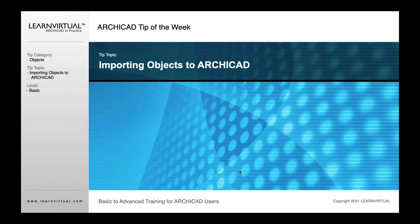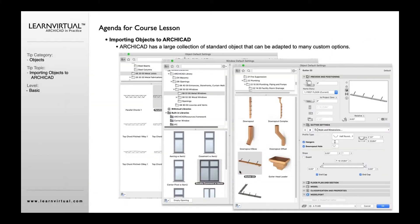Let's talk about importing objects to Archicad. This is our tip of the week. With importing objects, we have objects in Archicad for different purposes — whether it's for windows, gutters, structural, or whatever. These are objects that are internal to Archicad. Objects in Archicad are lean and mean because they have parameters that allow Archicad to work very efficiently.